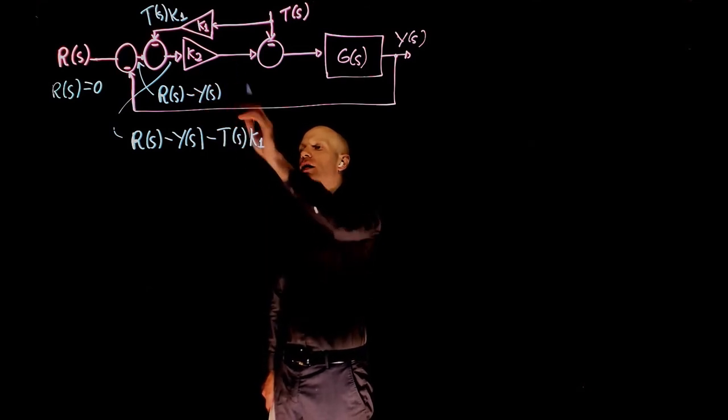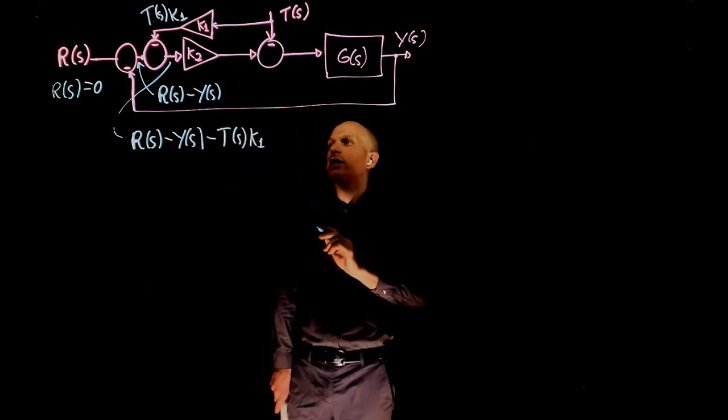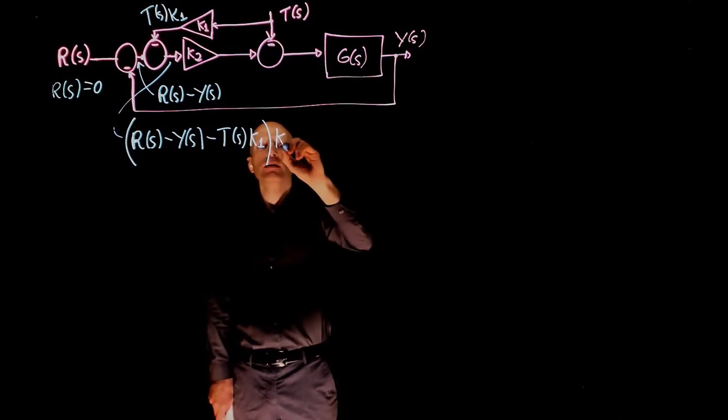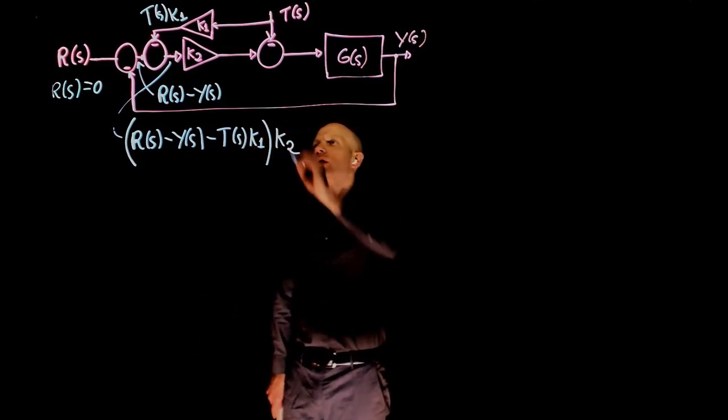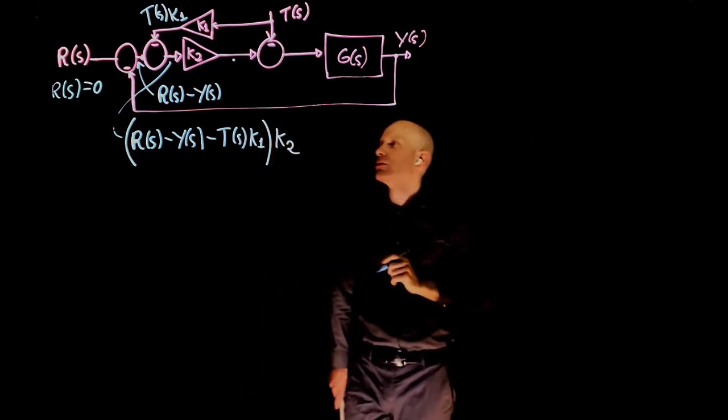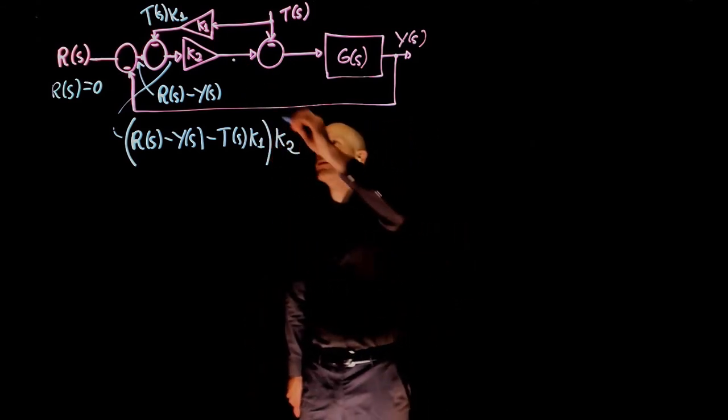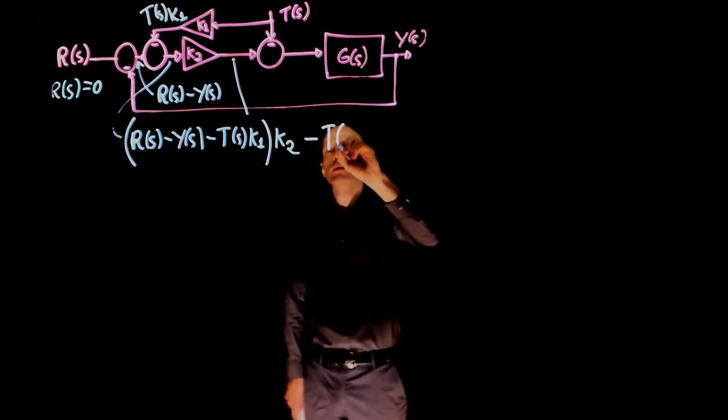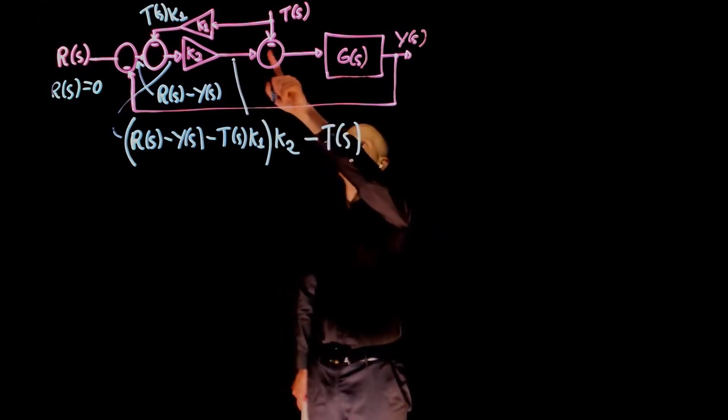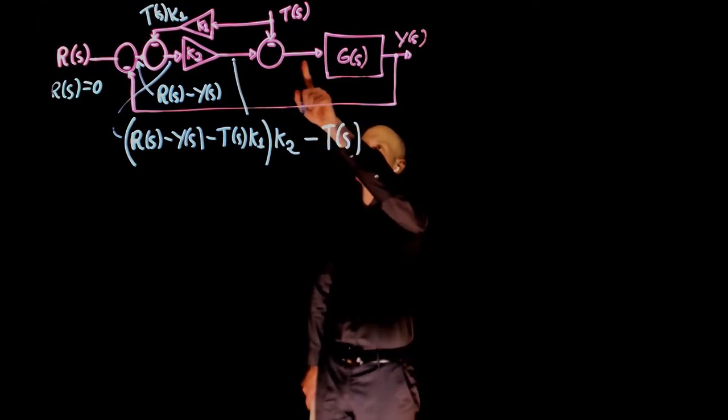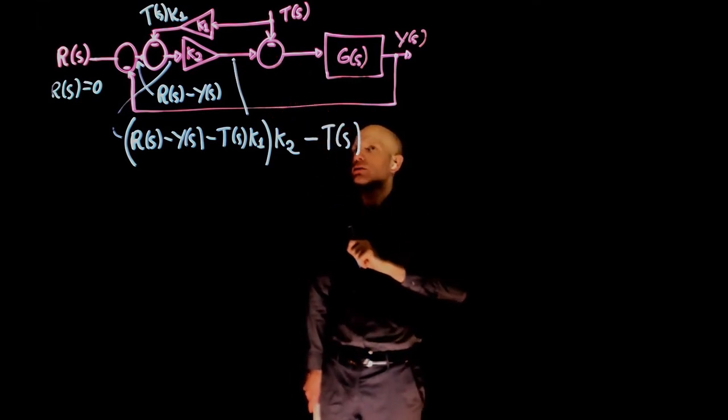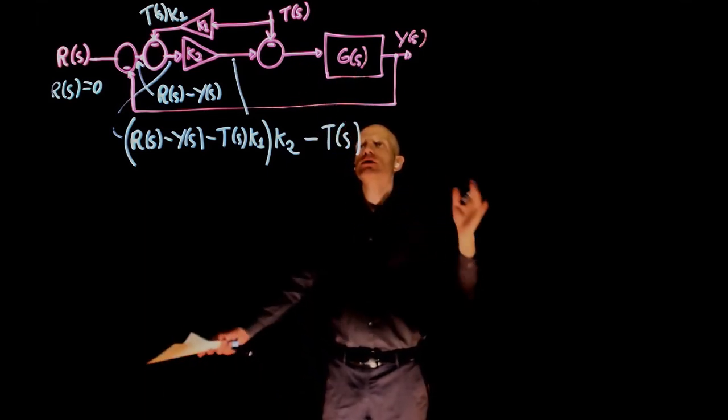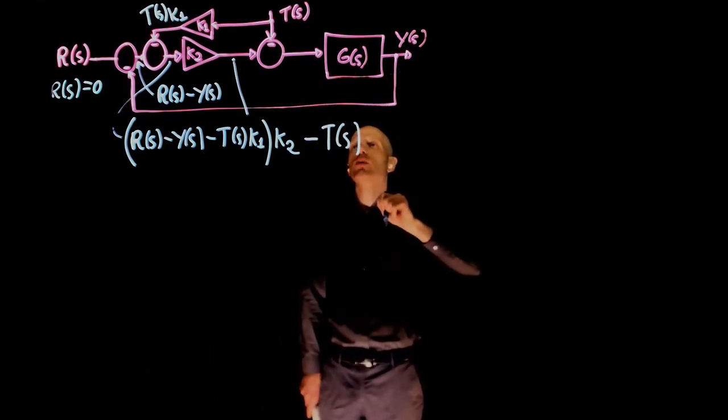So the signal after the gain is the whole thing times K2. The signal here minus T, which is a signal that is being injected here to the negative sign, is the signal at this point of the circuit.